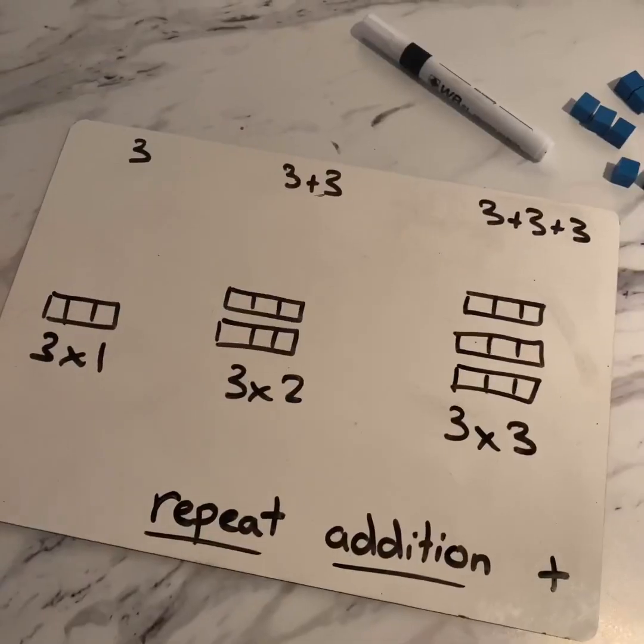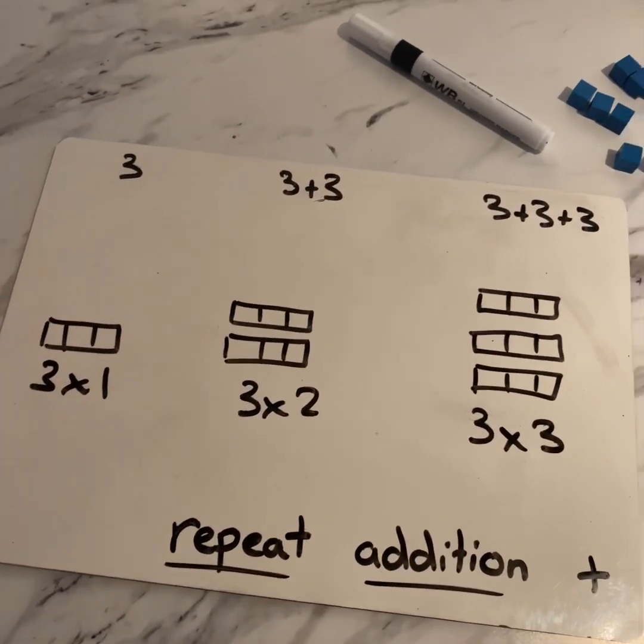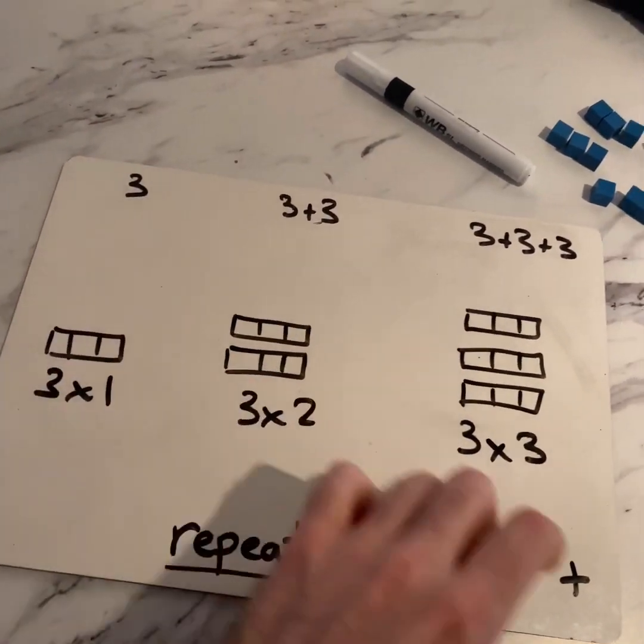If you've got lots of cubes, you could try to build the whole three times table from three times one all the way up to three times ten. And if you don't have the cubes, don't worry — you could even draw it. You could use a whole piece of A4, maybe split it into two lines. Feel free to pause the video and give that a go. However, if you feel you understand that and need to move on, I've got a slightly different thing to do next.